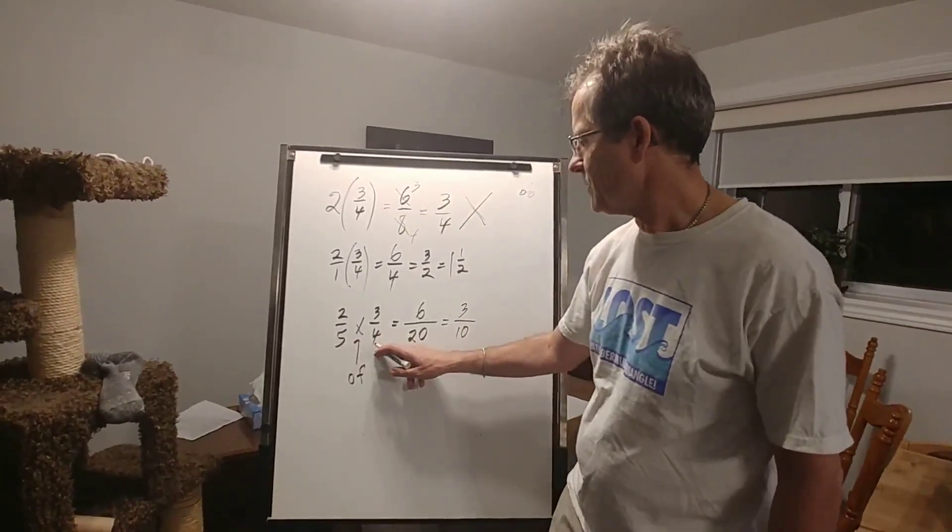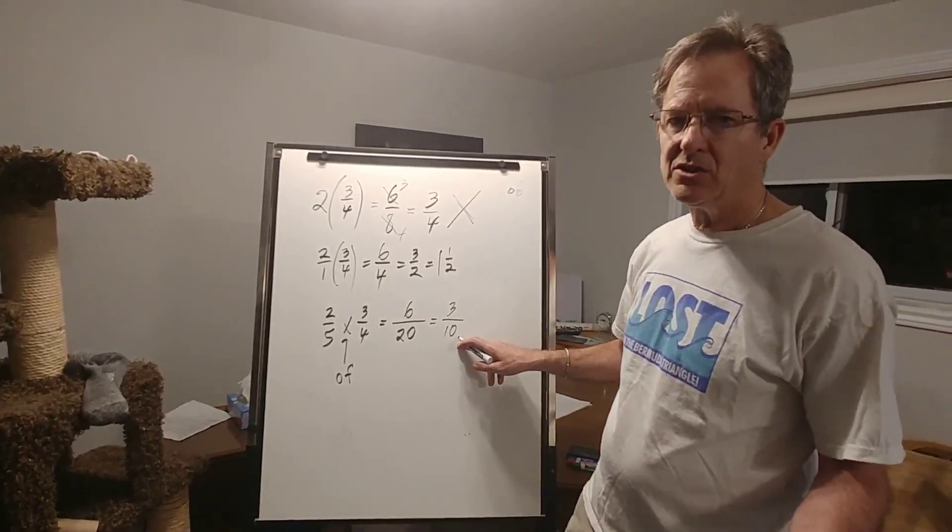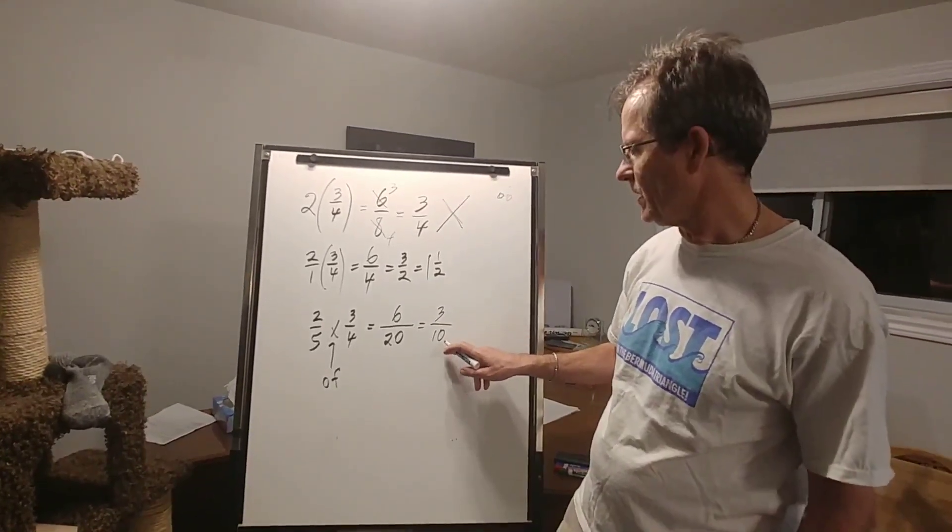So two fifths of three quarters is three tenths. No one's going to guess that unless you're a genius and psychic. So it's better to work it out.